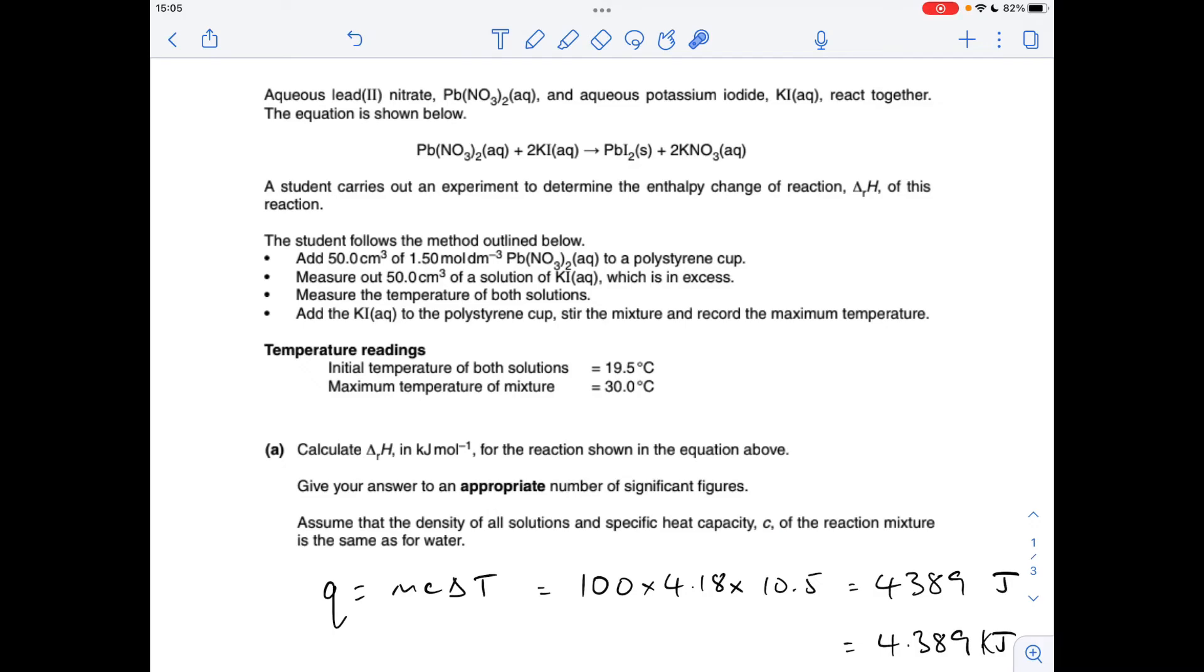Okay so part A is a classic calorimetry experiment. We've got all this information about a reaction between these two chemicals. One's in excess, they're mixed together in a polystyrene cup and we've basically got to find the enthalpy change for the reaction.